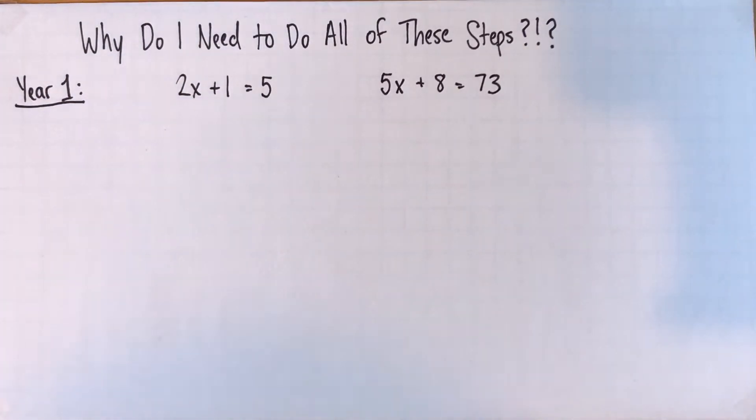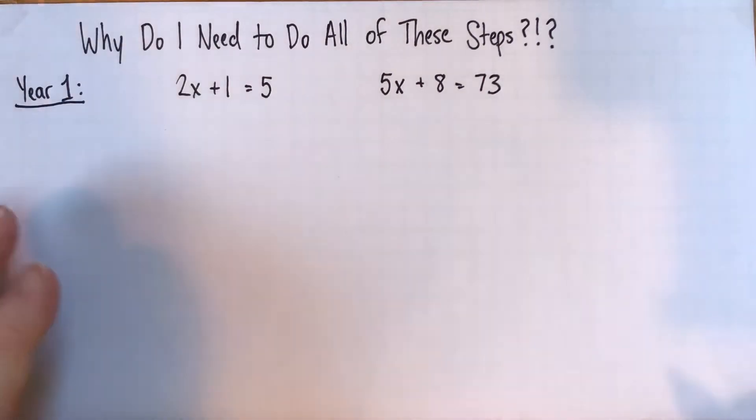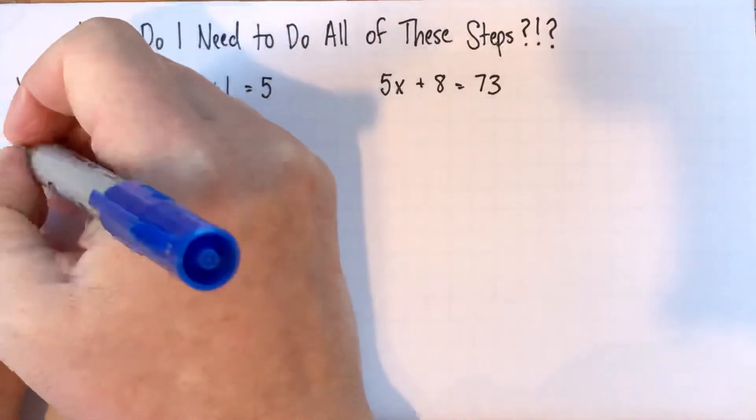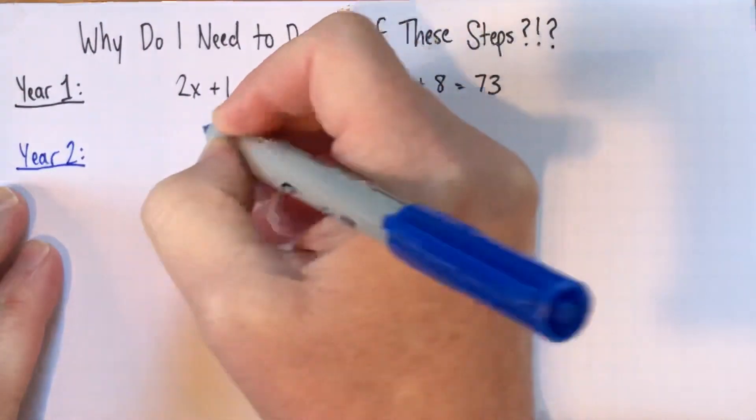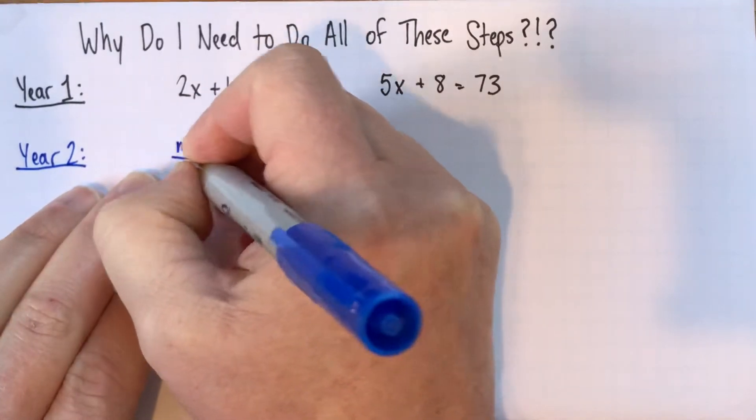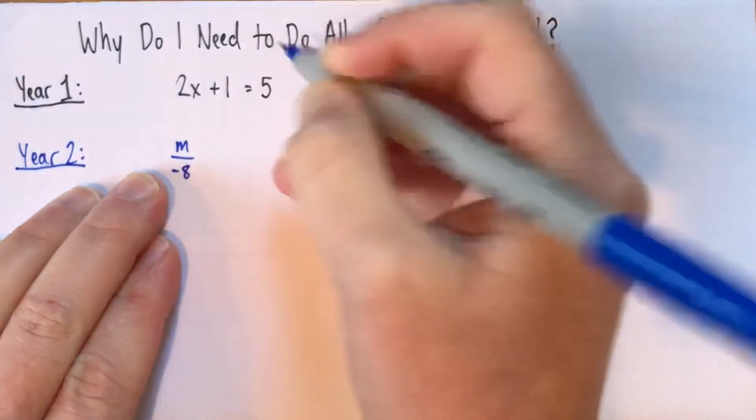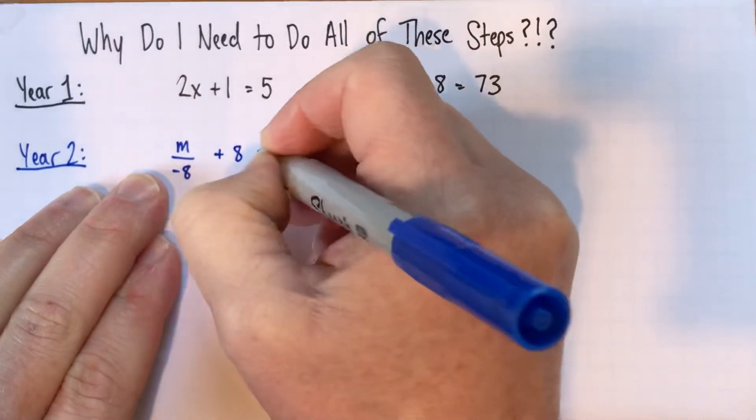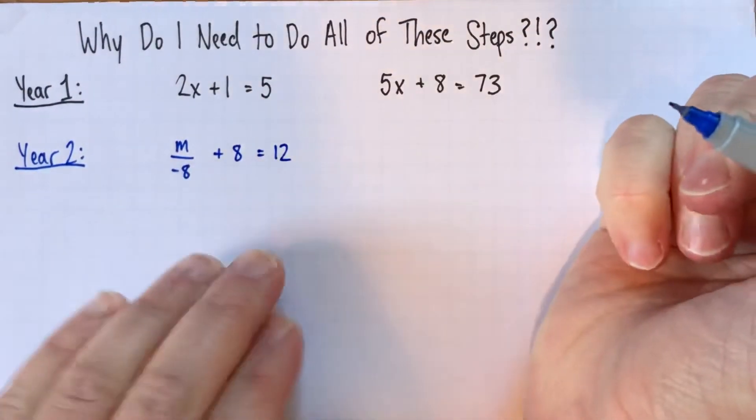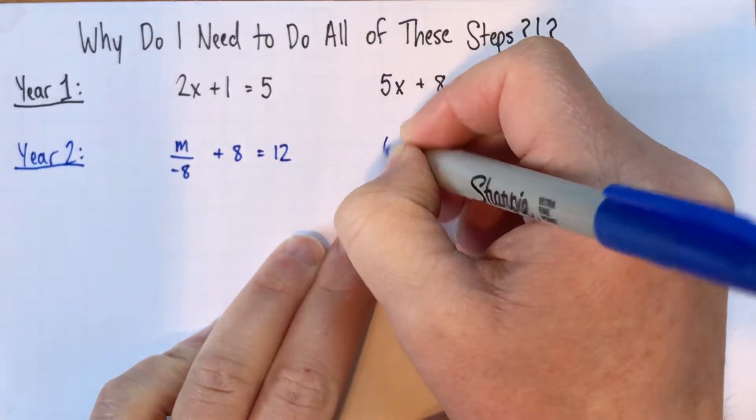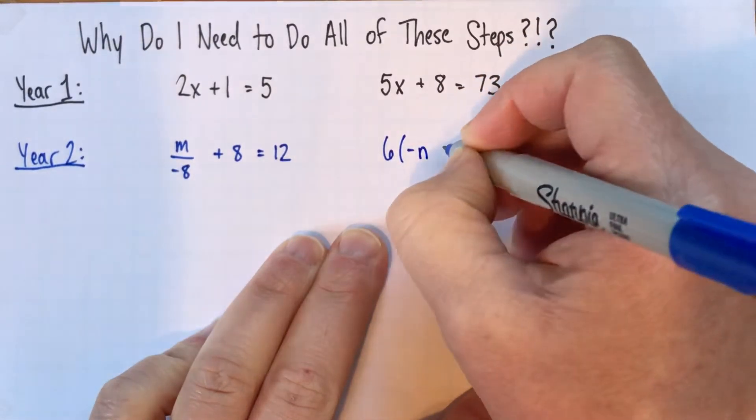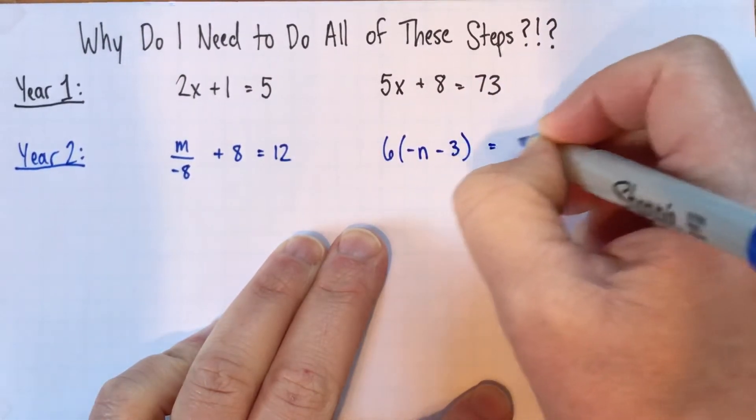And then, of course, what teachers say is, oh, you need to do this to prepare for next year, which is exactly true. And I just wanted to show you what the next few years of equations look like. So these are all just copied out of our textbooks. So this is the next year. So an equation, I just opened the book to different pages. I copied out this equation here. So m divided by negative 8 plus 8 equals 12. And then here's another one. 6 times negative n subtract 3 equals 24.